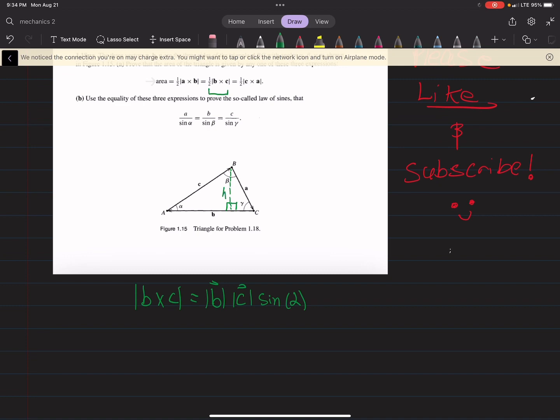And we'll call this height here H, because we can also see, since it's a right triangle, using SOHCAHTOA, that sine of the angle alpha is equal to opposite H over the hypotenuse C. So then C times sine alpha is equal to H.